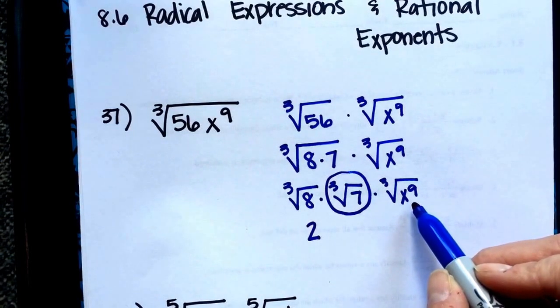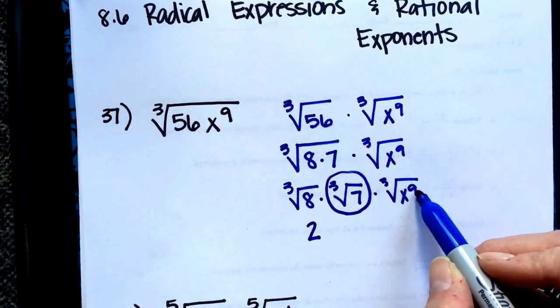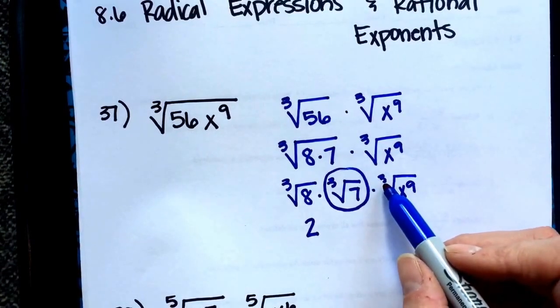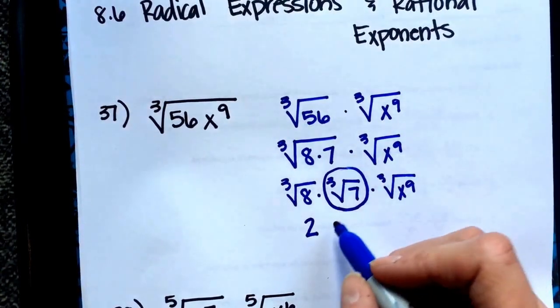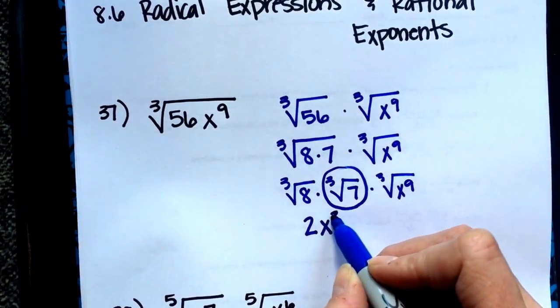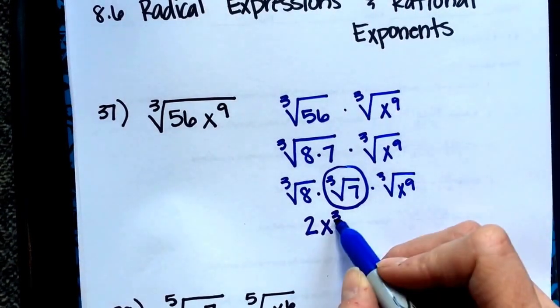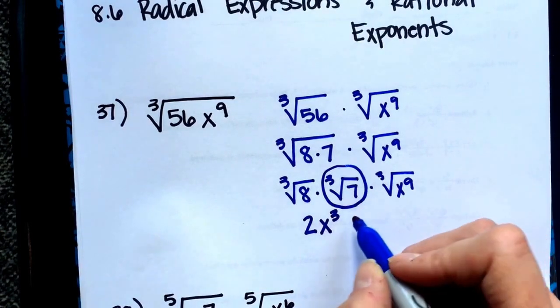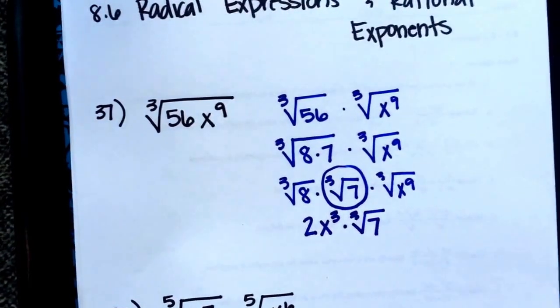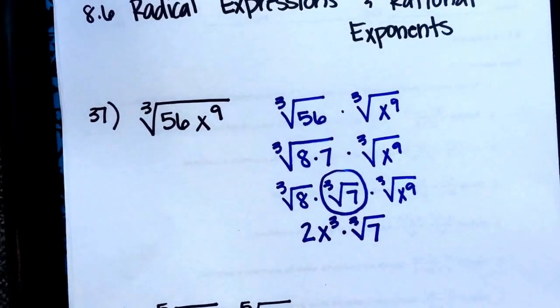When we come over to the variable x to the ninth, 9 divided by 3, power divided by root, is 3. It comes out to be a whole number, so that comes out of the root as x to the third. This cubed root of 7 has to stay inside the radical and cannot be simplified any further.